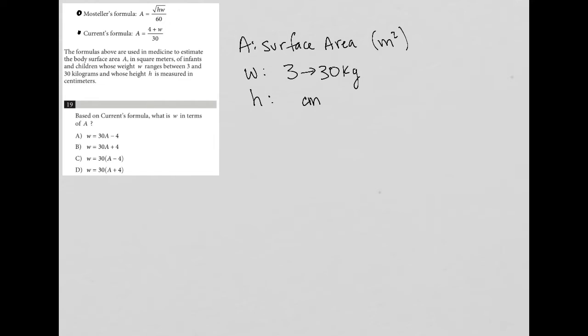The formula along with these definitions tells us what the variables actually mean. Question 19 says: based on Current's formula — which is A equals (4 plus W) divided by 30 — what is W in terms of A? This is a very common SAT question.